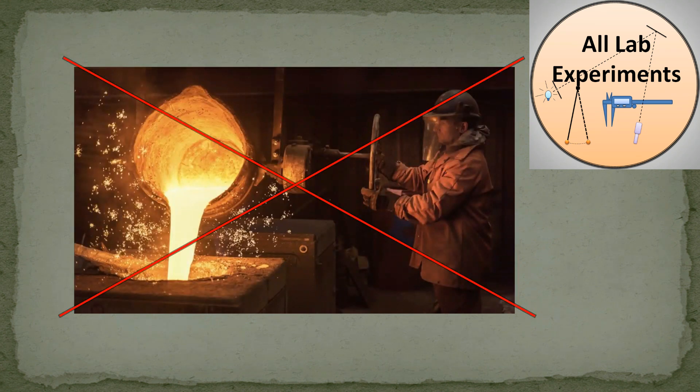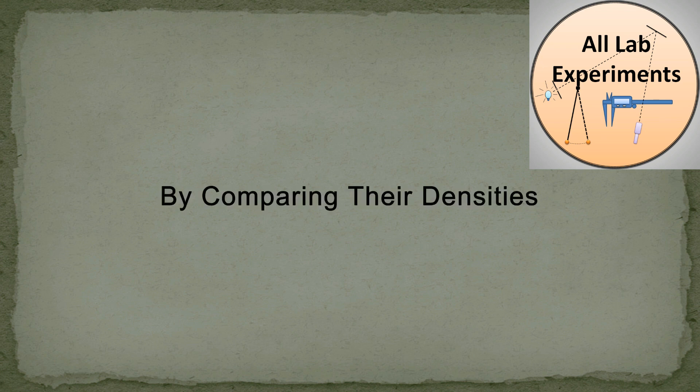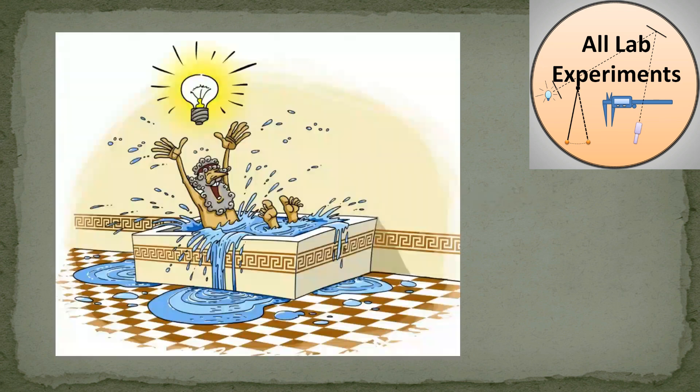After some time, he came out with this method of density measurement. So in this way, without melting a body, he was able to distinguish pure gold and a mixture of gold and some metal by comparing their densities.